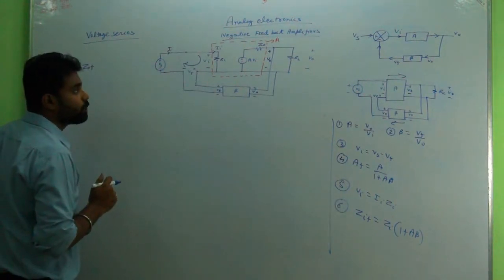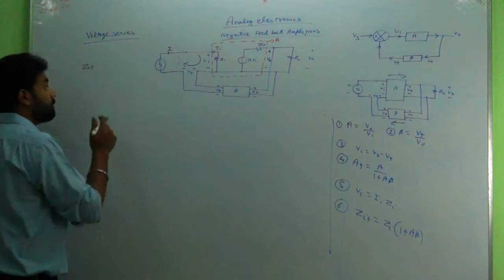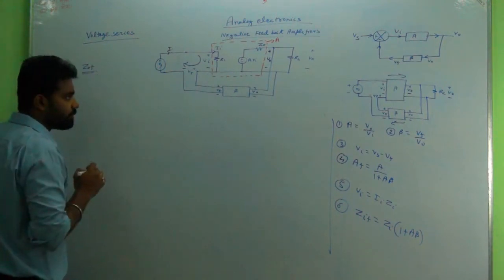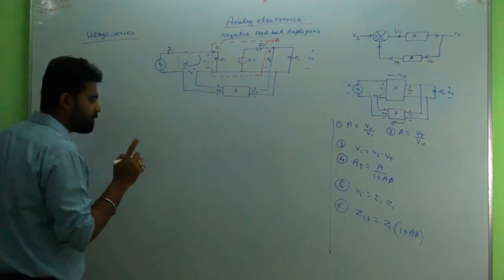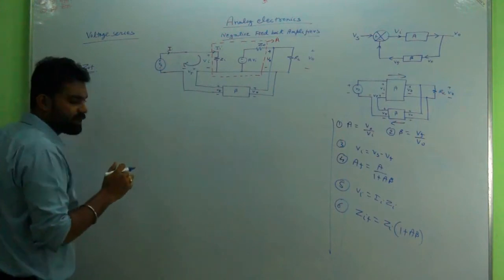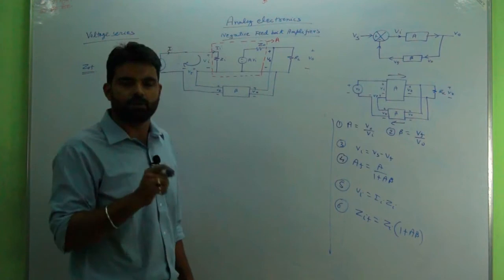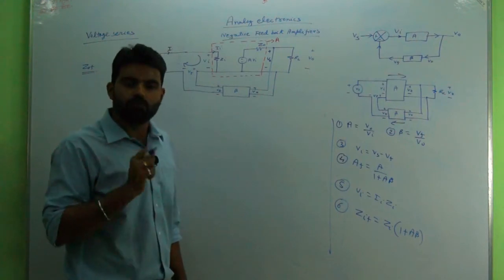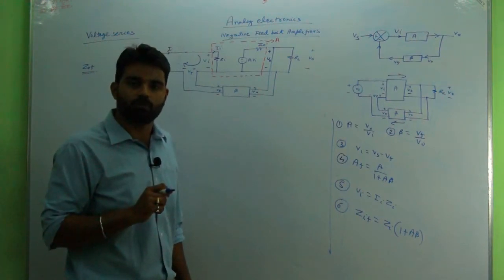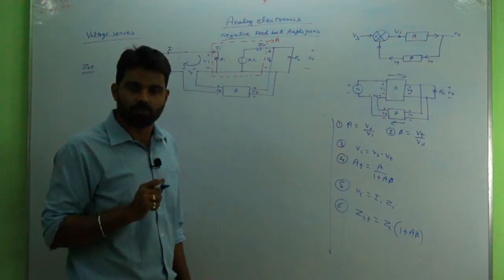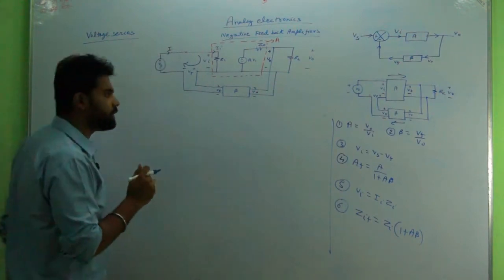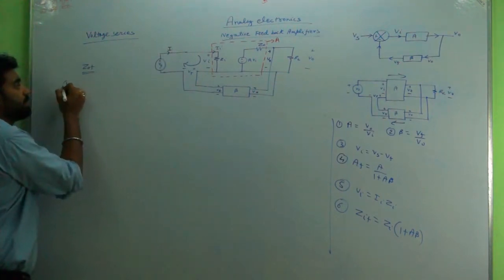Before starting with the mathematical derivation, one thing has to be made clear: whenever we will discuss output impedance, two assumptions have to be made. As a first assumption, consider RL tending to infinity - that is, remove anything whatever be it, because RL is subjected to change.